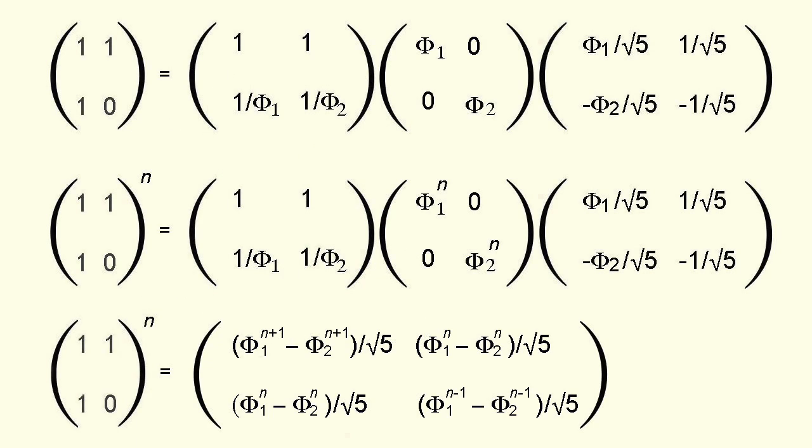Now if m equals q d q to the minus 1 then m to the n equals q d to the n q minus 1. So we have this. And when we multiply out these matrices we find that this is the result.